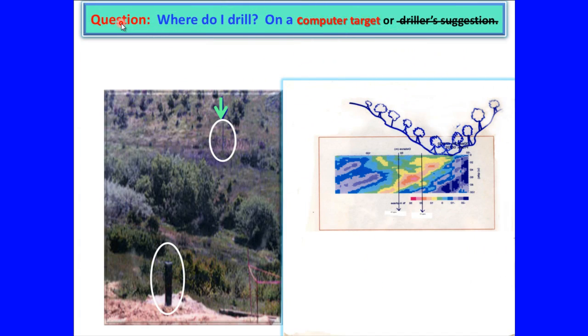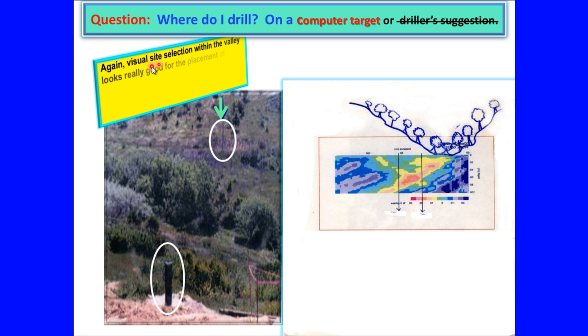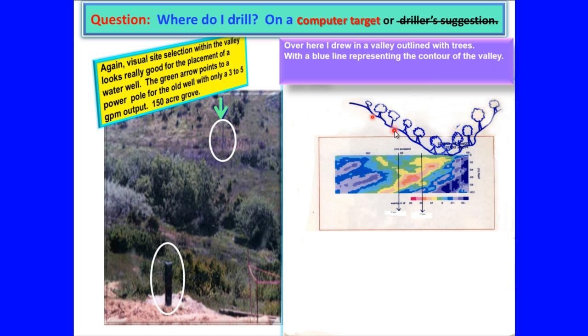Question: Where do I drill? On a computer target or driller suggestion. Again, visual site selection within the valley looks really good for the placement of a water well. The green arrow points to a power pole for the old well with only a three to five gallon per minute output. One hundred fifty acre grove. Over here I drew in a valley outline with trees with a blue line representing the contour of the valley. This blue contour line is transposed onto the picture of the valley.